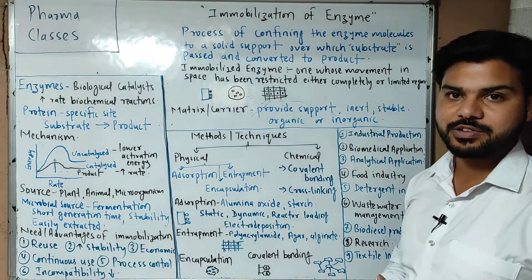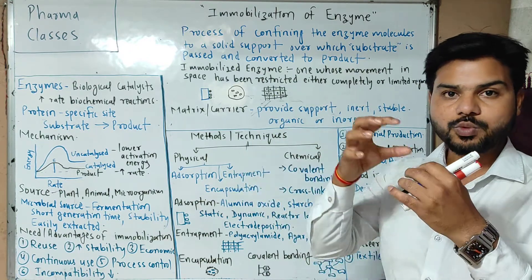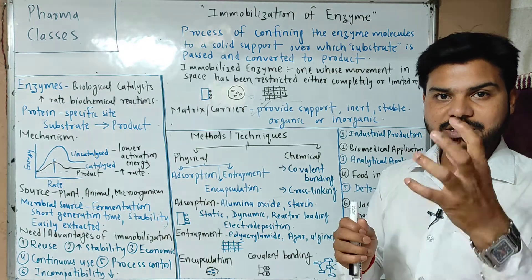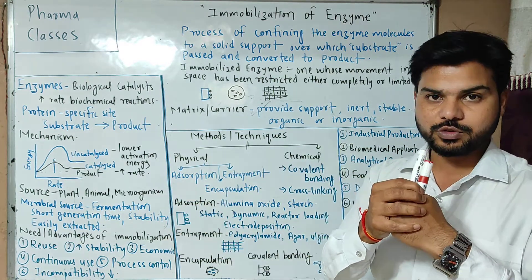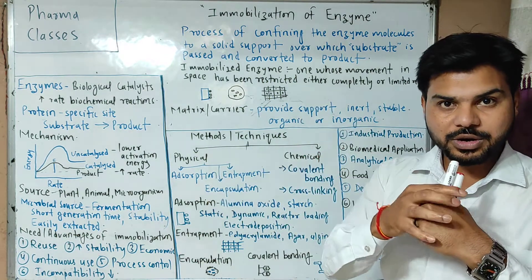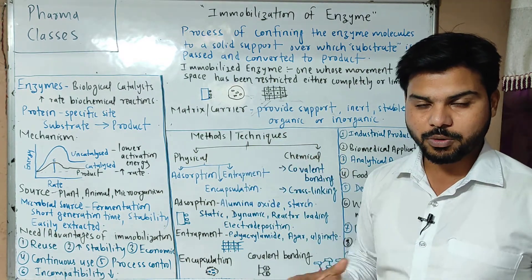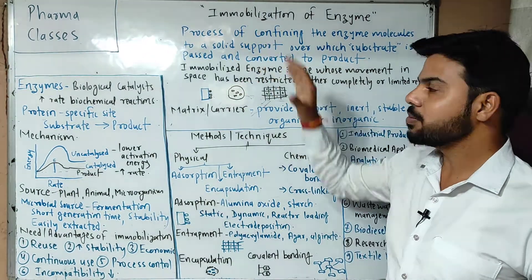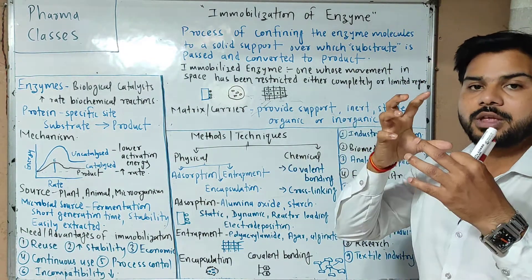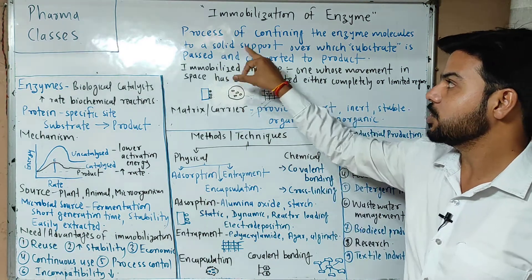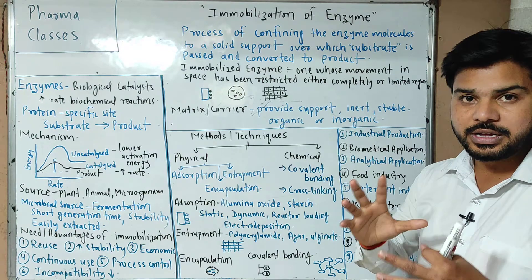Immobilization is a process in which we entrap an enzyme in a polymer support, or absorb it, or use co-valent linking. Ultimately, we provide enzyme to a support. It is a process of confining the enzyme molecule — to enclose, encapsulate, and trap — to a solid support, over which the substrate is passed and converted to product.